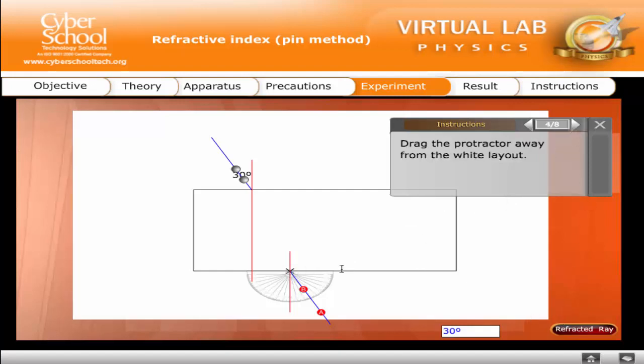Move the mark X to the normal at this point. Drag the protractor away from the white layout. Click Refracted Ray. This generates the refracted ray and the angle R.